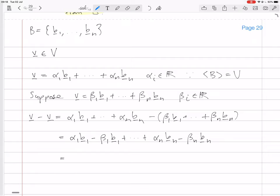But now you can factorize: (α₁ - β₁)v₁ + ... + (αₙ - βₙ)vₙ.